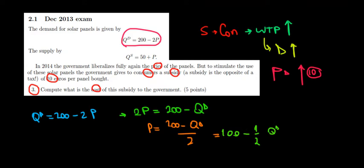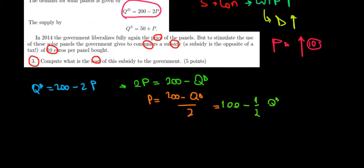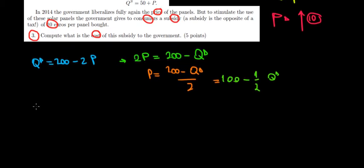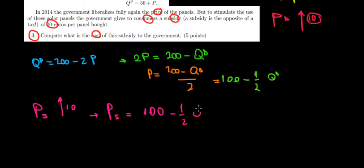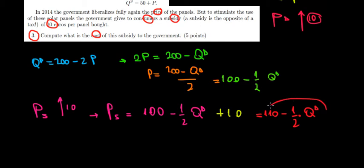Now the price after the subsidy — let's call it PS — increases by 10 euros. So the price after the subsidy is going to be 100 minus one-half times quantity demanded, plus 10 (the subsidy the government gives to consumers). Working out the math, we get a new demand price function: PS = 110 minus one-half times the quantity demanded.